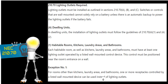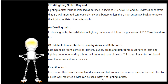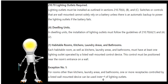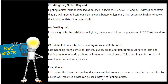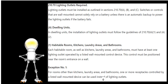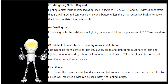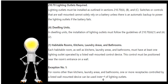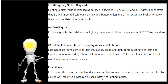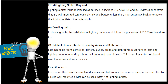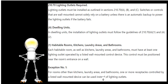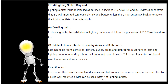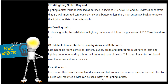In Section A1, it says: in dwelling units, the installation of lighting outlets must follow the guidelines of parts A1 and A2. Looking at A1 — habitable rooms, which is a defined term, kitchens, laundry areas, and bathrooms — each must have at least one lighting outlet operated by a listed wall-mounted control device, positioned near the room's entrance on the wall.